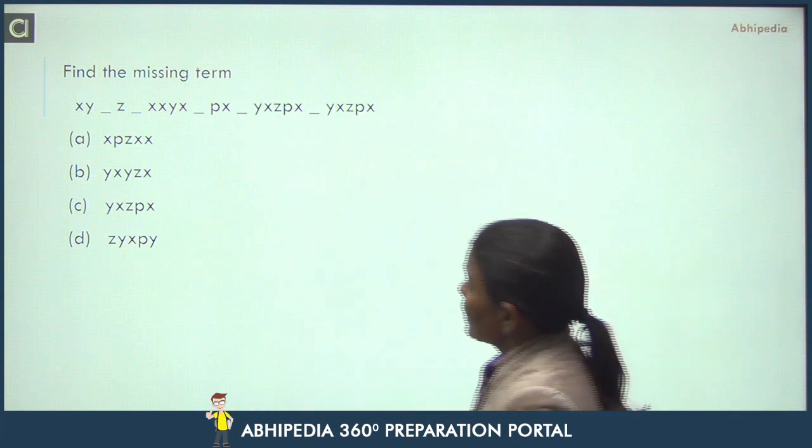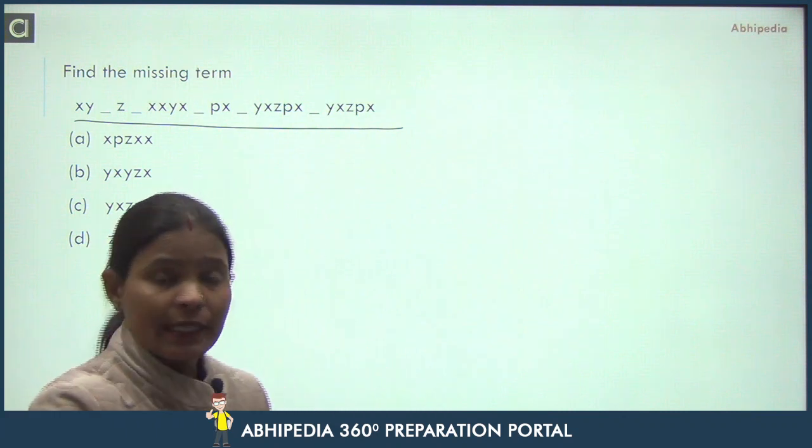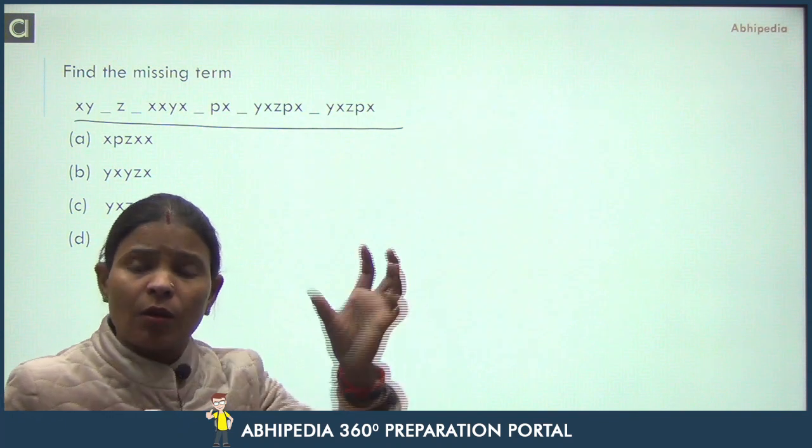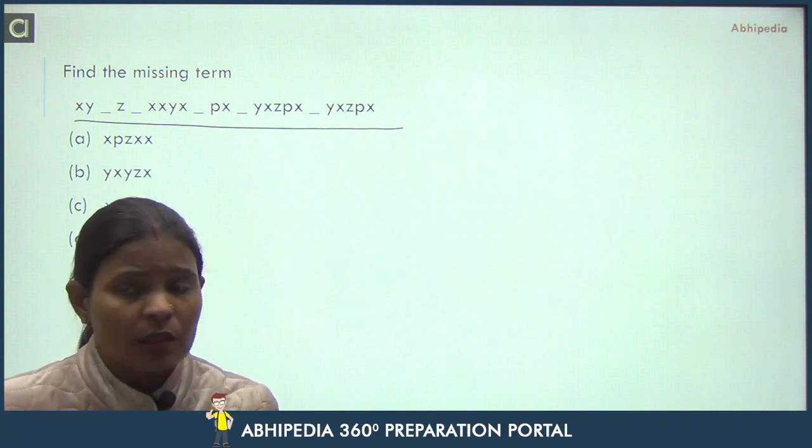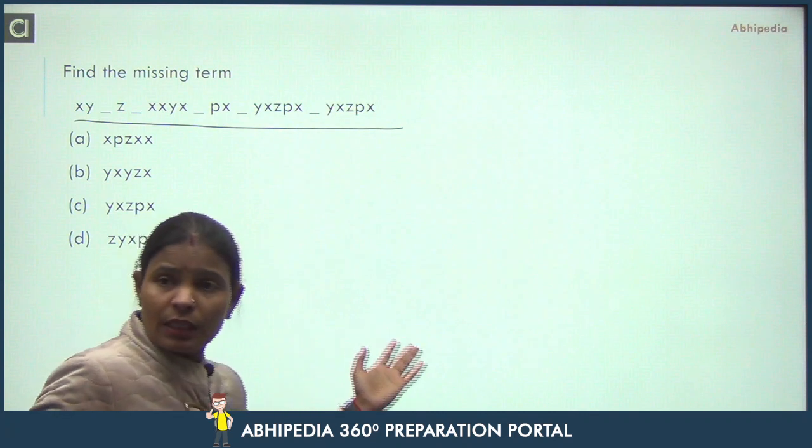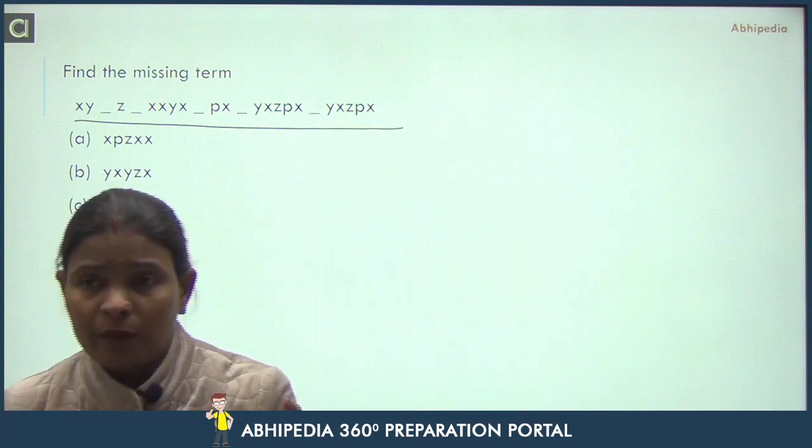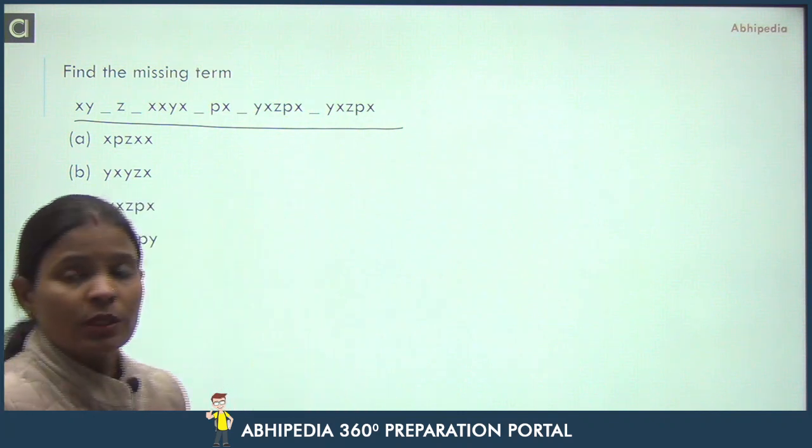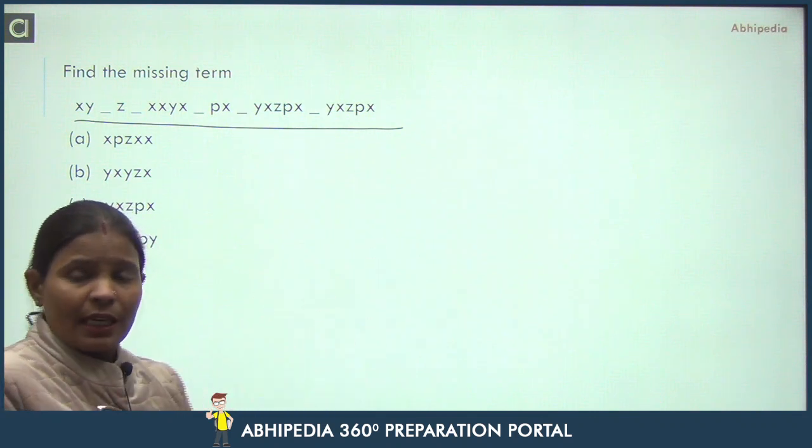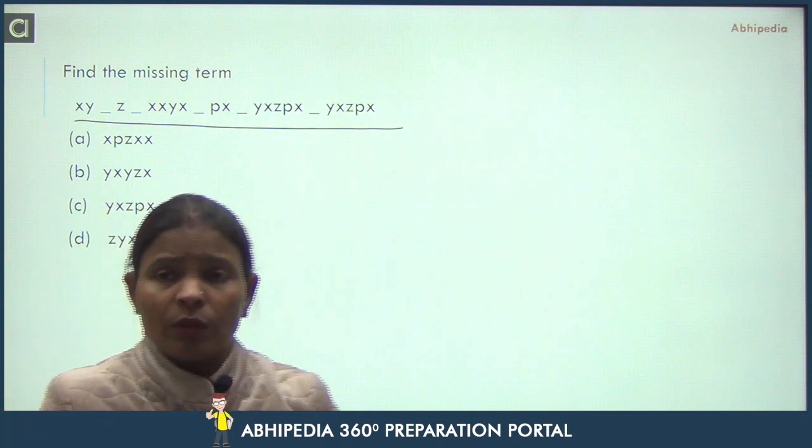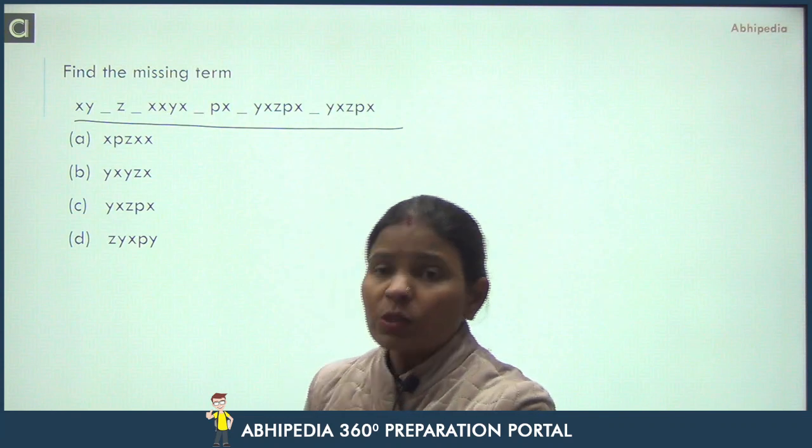Next is missing series. In missing series, you are given some alphabets. You'll definitely get one such series in the exam. A common pattern repeats. You need to find the pattern. One type of series you'll get is the one we just did - three series types. This missing series is the easiest. You just have to find out which pattern is repeating.